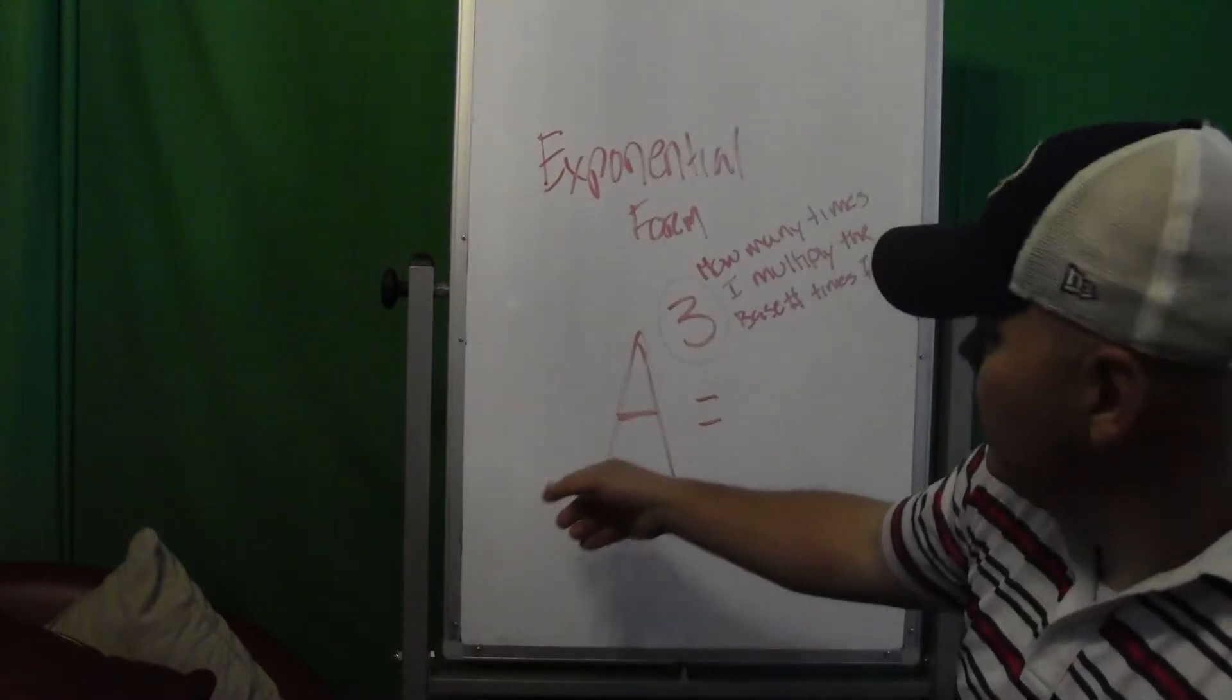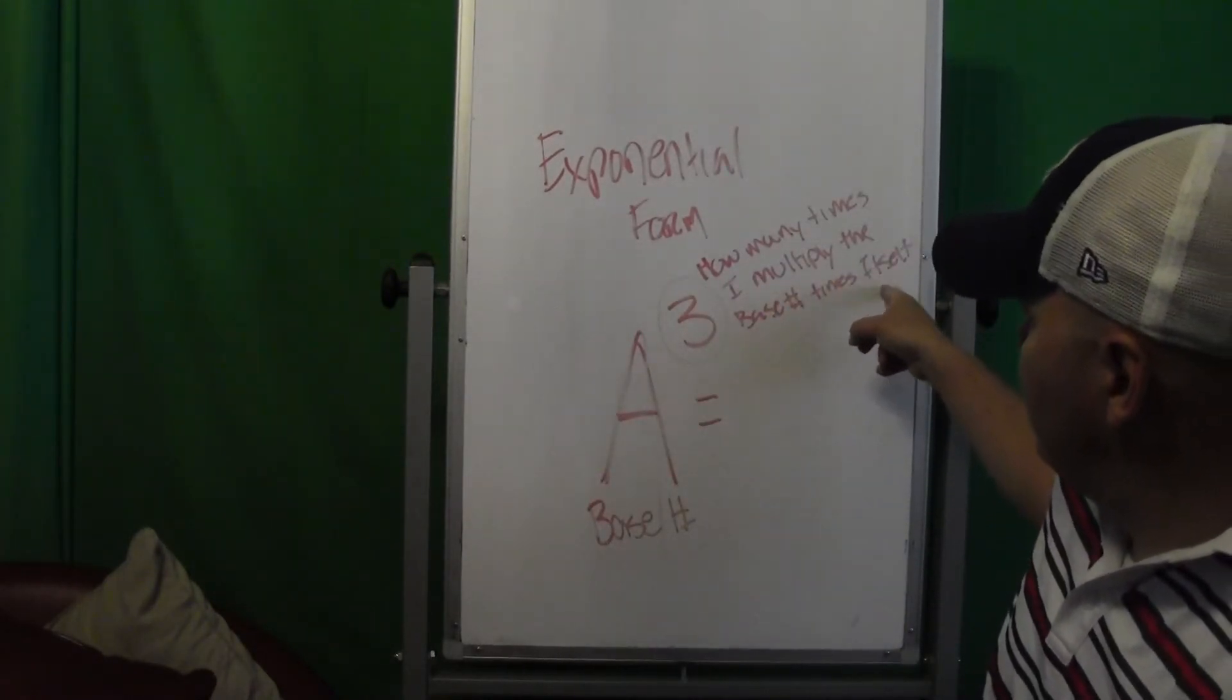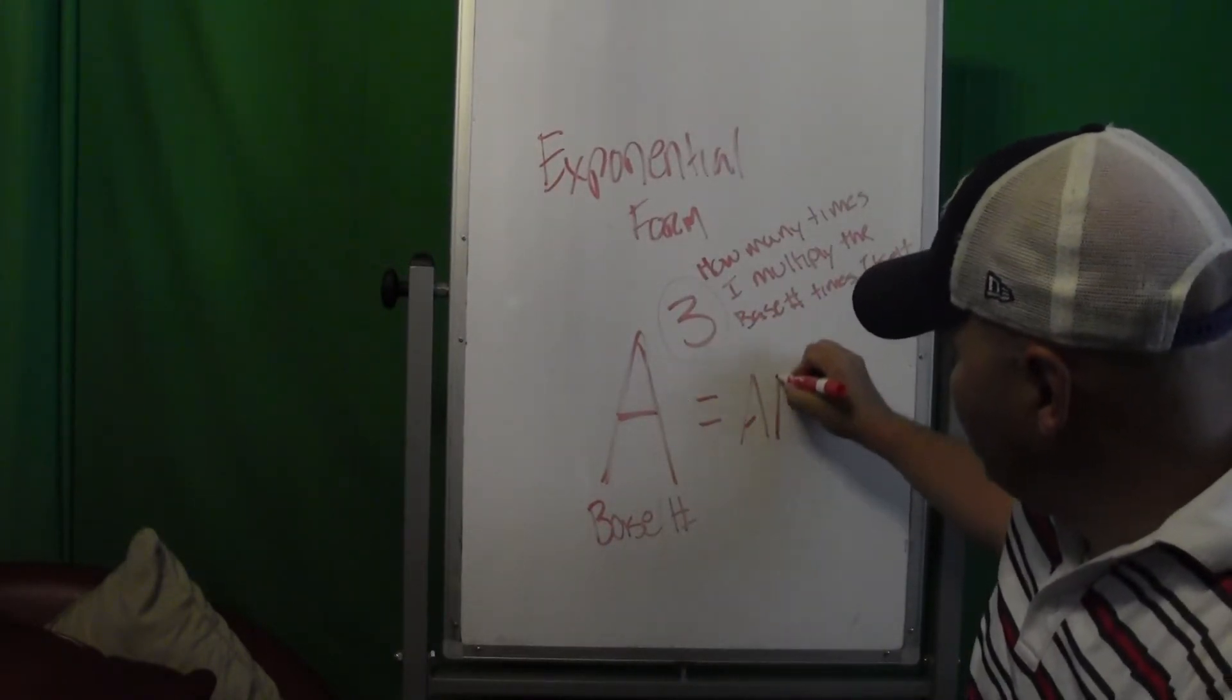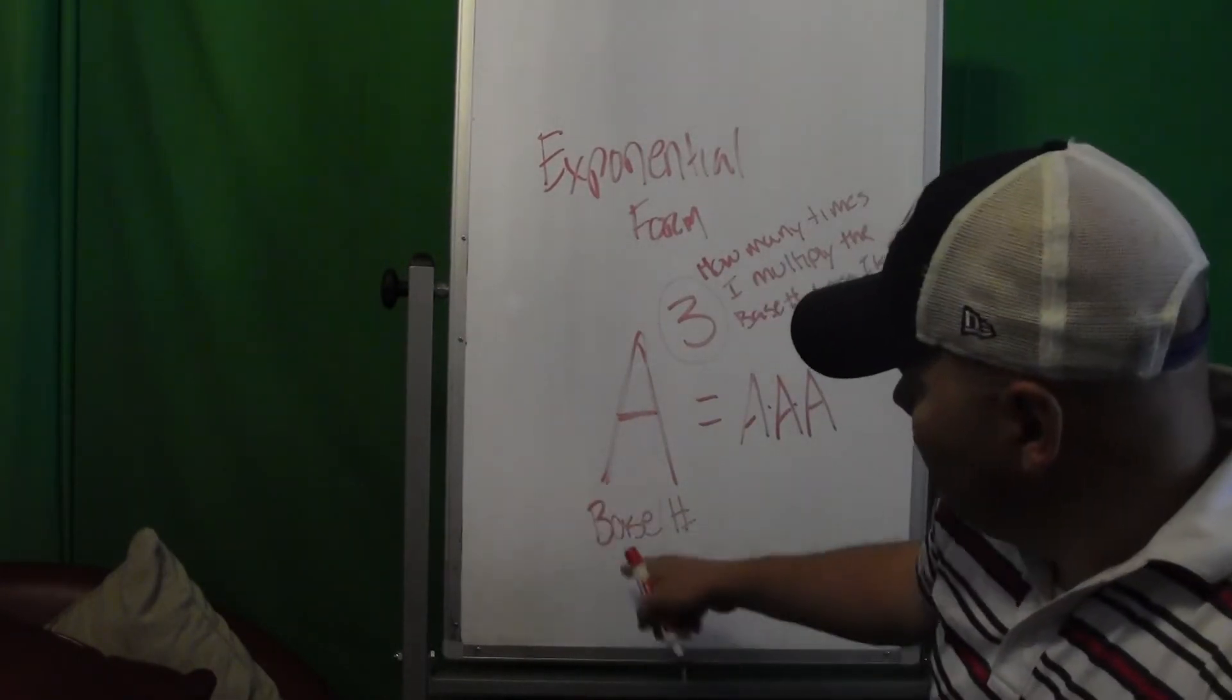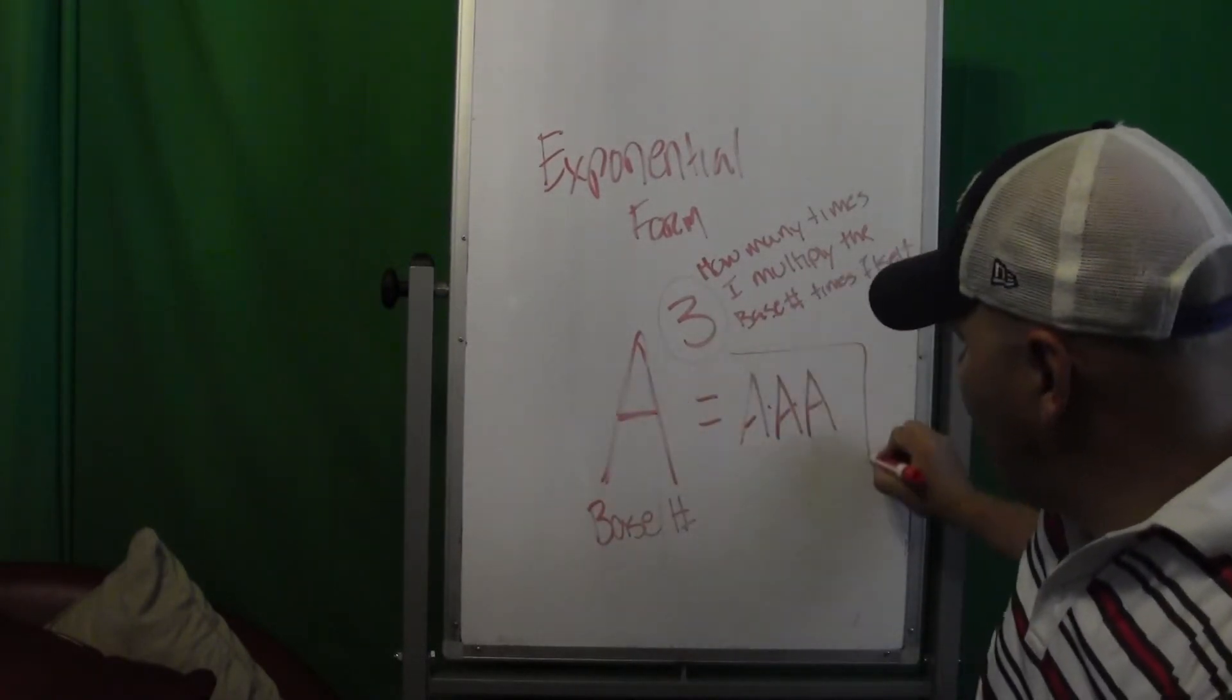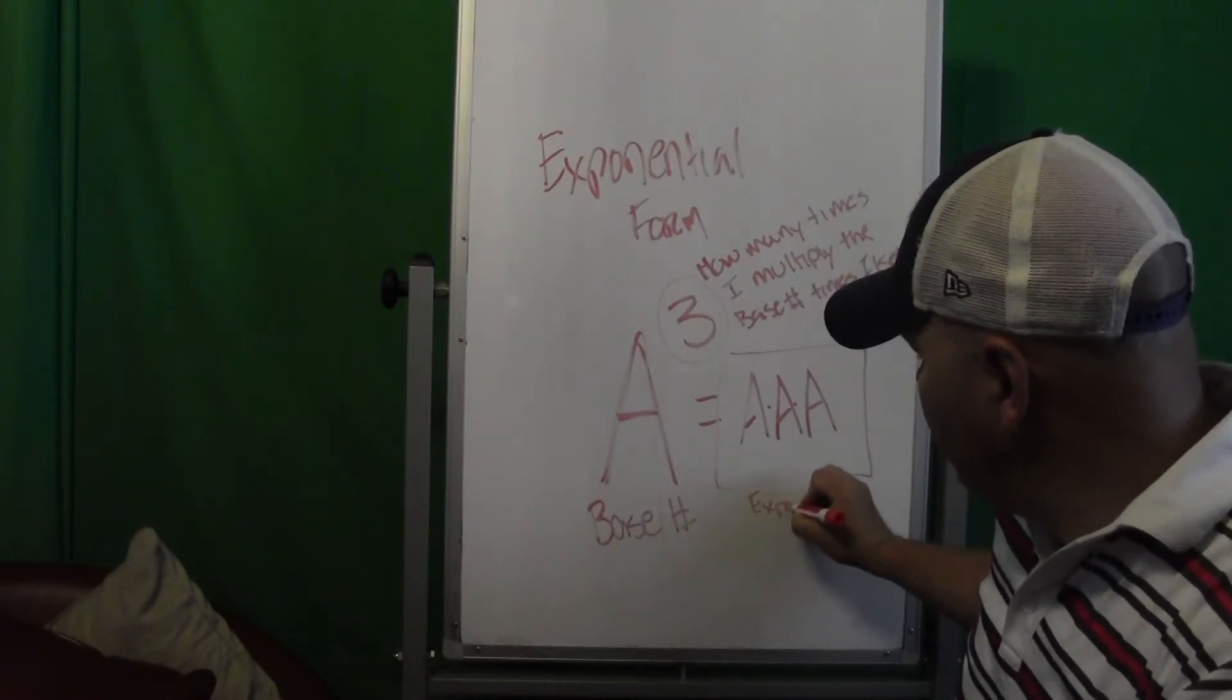That says I'm taking my base number and I'm going to multiply it times itself 3 times. So I could rewrite that then as a times a times a. That's what this is. My exponential notation, this written out is called expanded form.